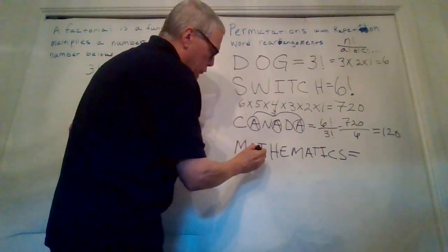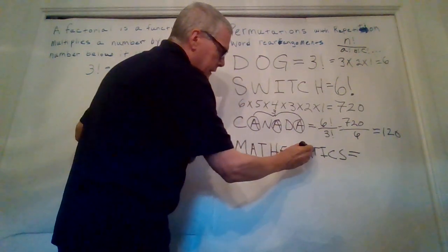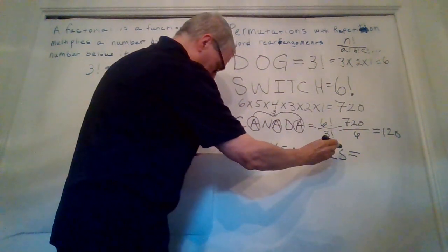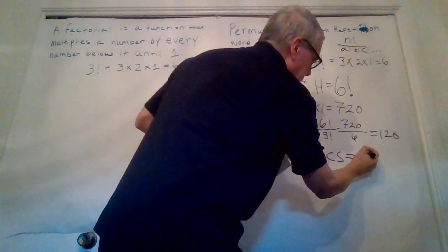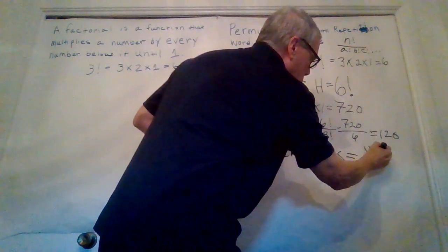So the number, 1, 2, 3, 4, 5, 6, 7, 8, 9, 10, 11. So that's going to give us 11 factorial.